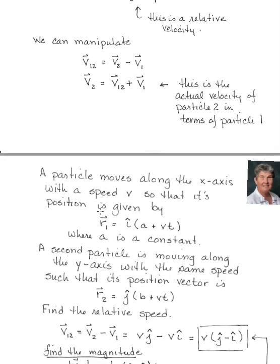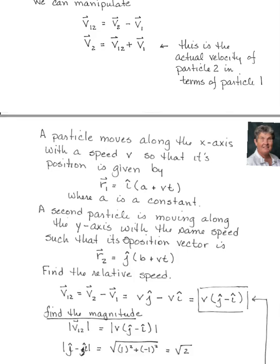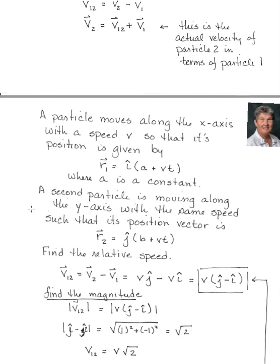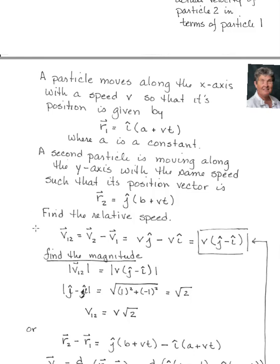Let's look at an example. A particle moves along the x-axis with speed v so that its position is given by r1 = î(a + vt), where a is a constant. A second particle is moving along the y-axis with the same speed such that its position vector is r2 = ĵ(b + vt). Find the relative speed. We can go through v12 = v2 - v1. They're both traveling at the same speed, one in the y direction and one in the x direction.